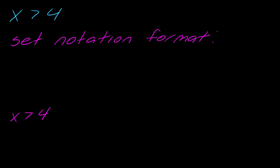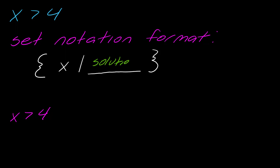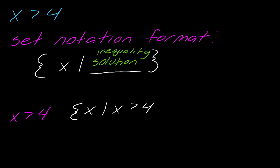Then next we have set notation. Set notation has a very particular format — it always looks like this: you have this bracket, x, this bar, and then whatever the solution is. So this is kind of whatever your inequality solution is here — this is the only part that will really change; the rest is the same. So this one's pretty simple — it's just going to be this x, and you slide in that x is greater than 4. This stands for all x's such that x is greater than 4.